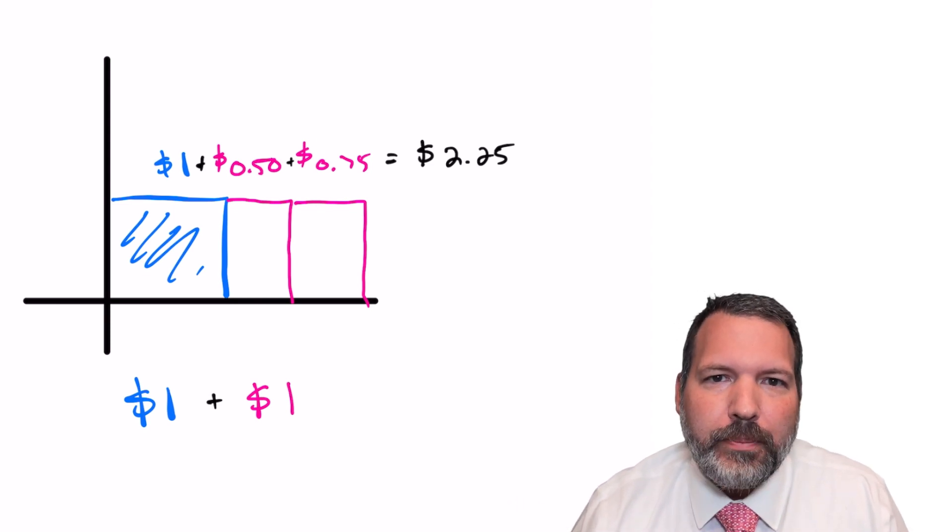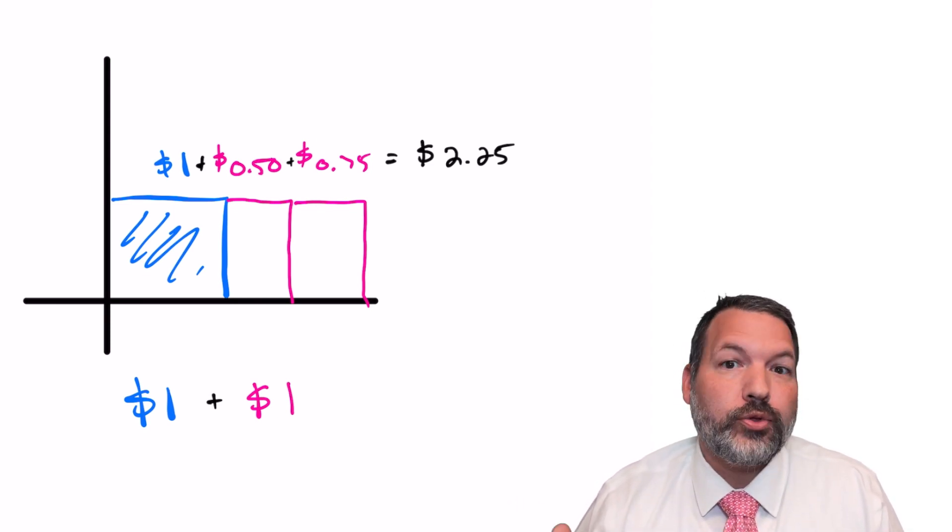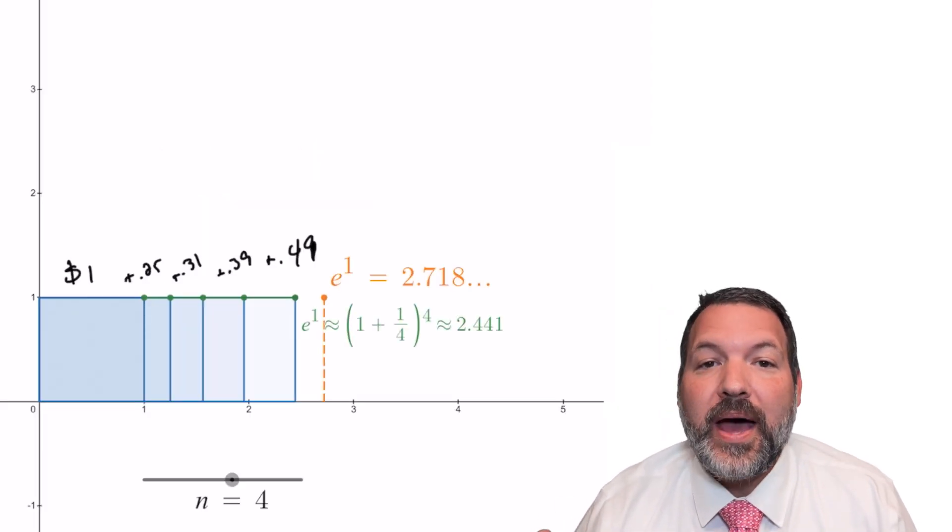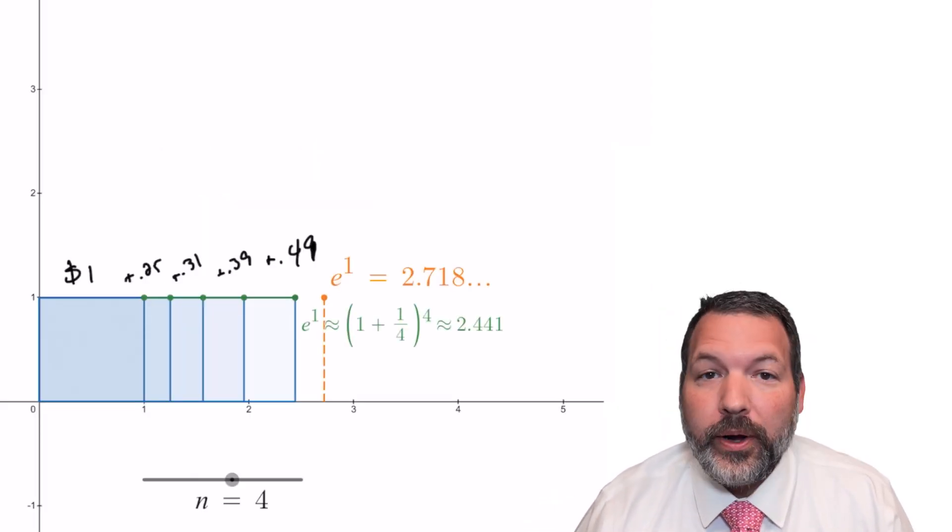My goodness, this is like free money. What if we checked in three times a year? What if we checked in 12 times a year? It's this idea that lies behind the mathematical constant E. Euler's constant.